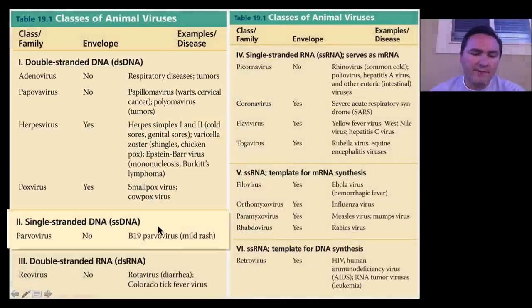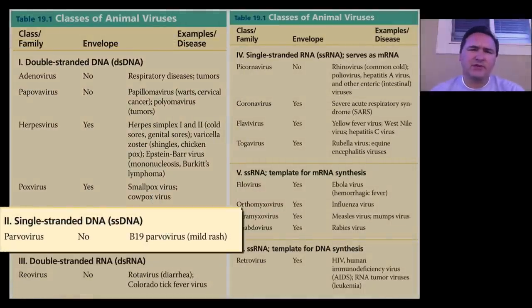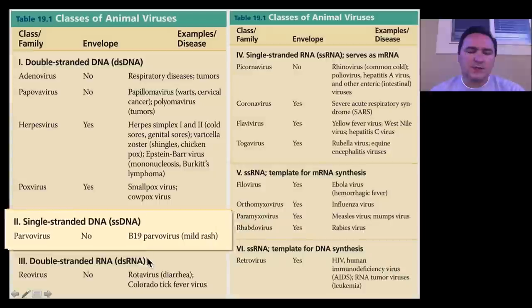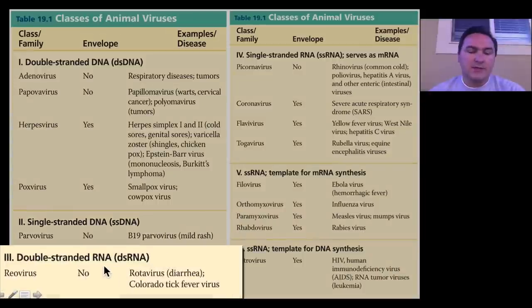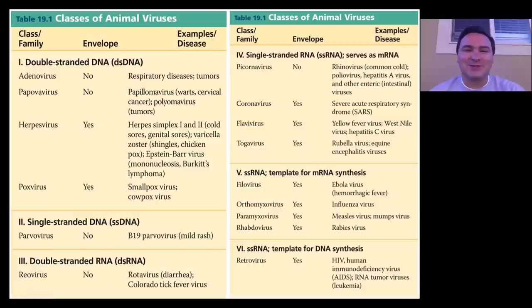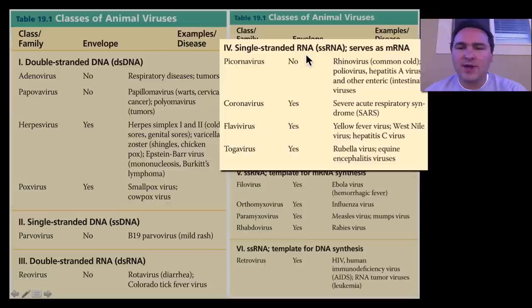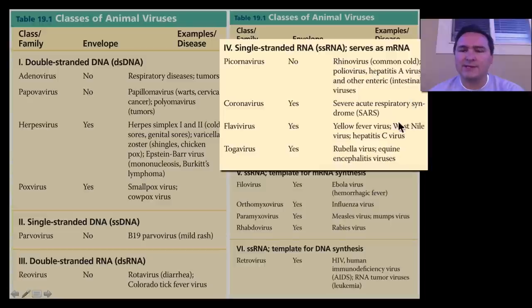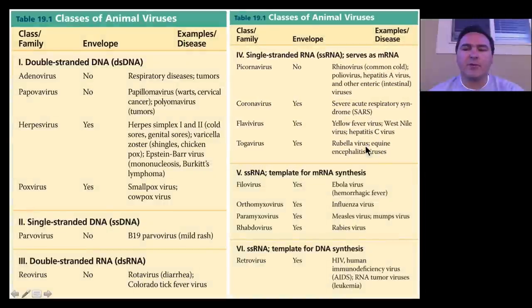Or you can have single-stranded DNA — I know that sounds weird because we've usually said that DNA is always double-stranded, but in viruses you can have single-stranded DNA, like this parvovirus. You can also have double-stranded RNA, which is also different from what we've said before. You can have single-stranded RNA viruses where the RNA serves as a messenger RNA only — things like the common cold viruses, SARS, yellow fever, rubella.